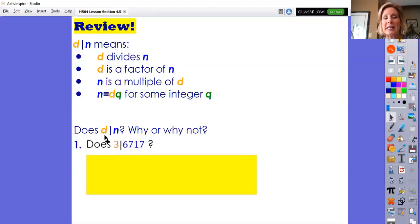So on to practice. Does d divide n? We're going to look at three of these types of questions. Does 3 divide 6,717? Well, I know the answer is yes because I know the trick. Remember, if you take a large number like 6,717 and add the digits—6 plus 7 plus 1 plus 7—you get 21. If 3 divides into 21 evenly, then it divides the large number evenly. So the answer is yes, but I want you to answer with a statement like: 3 divides 6,717 because 6,717 equals 3 times 2,239.